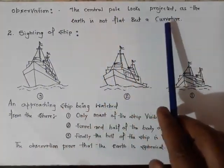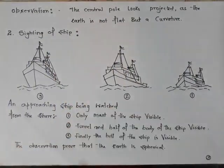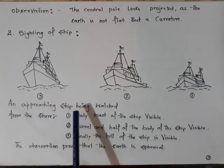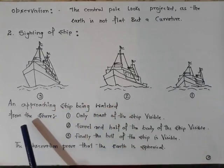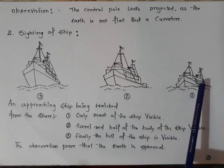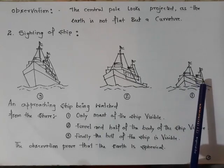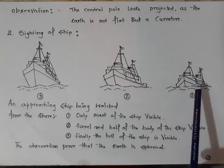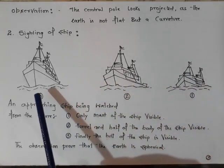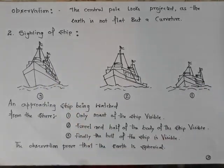The next observation is sighting of ship. An approaching ship being watched from the shore - the ship is partially seen. Why? Because it is appearing down at the curvature. But as it approaches towards the shore or the coast, it is fully seen. So this happens only when there is a curvature.